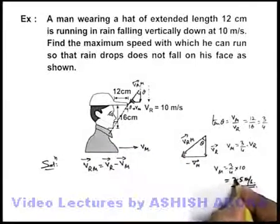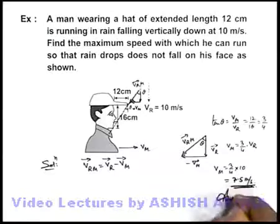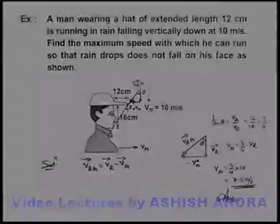So in this situation, the maximum speed at which the man can run is 7.5 meters per second. That is our answer. Thank you.